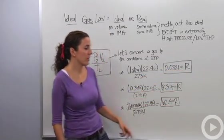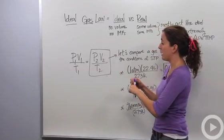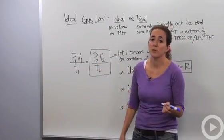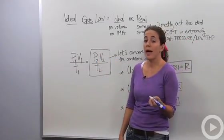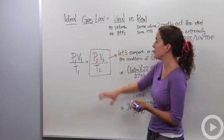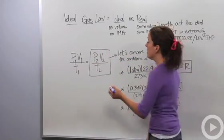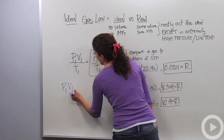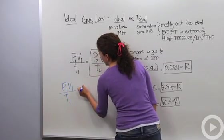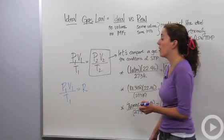So when we're dealing with the combined gas law and we want to actually compare something to a situation at STP, I can just replace this PV over T with the letter R. So in this case, I'm going to say P1 times V1 over T1 equals R.